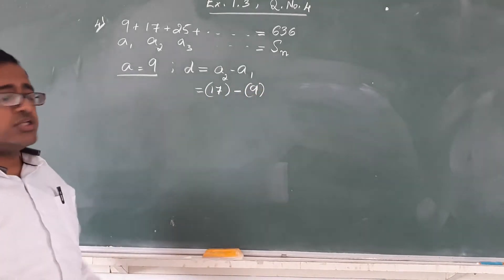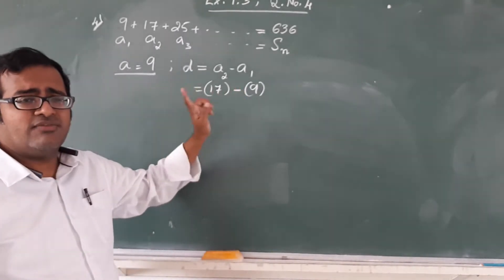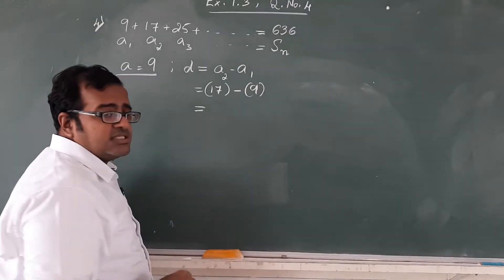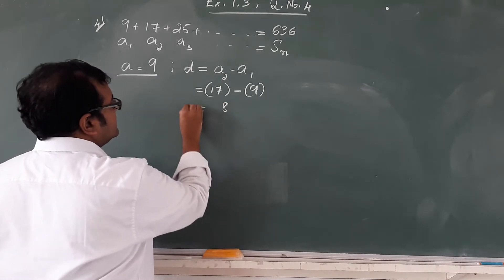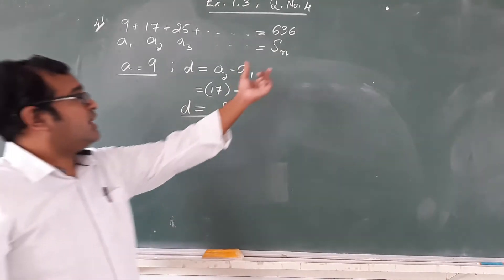Always do not forget to use brackets so that if negative values come, it plays a very important role. Now, 17 minus 9 which is 8. So difference is 8. We get A and D, we also have the value of Sn.